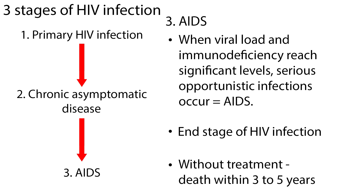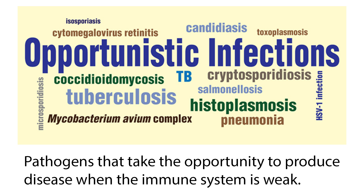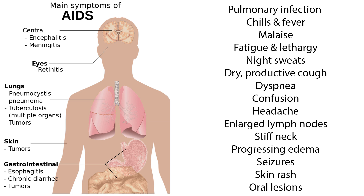AIDS is the end stage of HIV infection, and without treatment, death will occur in 3-5 years. Opportunistic infections are pathogens that take the opportunity to produce disease when the immune system is weak. Most symptoms associated with AIDS are from opportunistic infections and can affect every organ and body system.